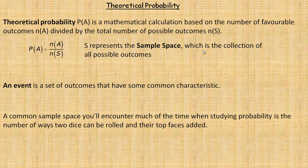In this tutorial, we'll talk about theoretical probability. The theoretical probability, the probability of event A happening, is a mathematical calculation based on two things: the number of favorable outcomes, which is called n(A), the number of A in set A, and you divide that by the total number of possible outcomes, the number in the sample space. That's what S stands for. So the theoretical probability of A happening is the number of events in event A divided by the size of the sample space.